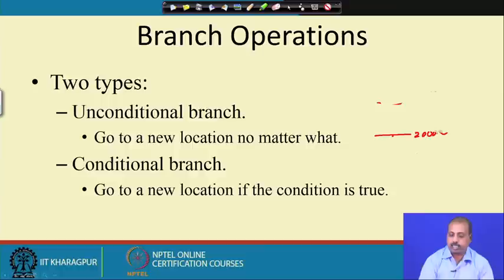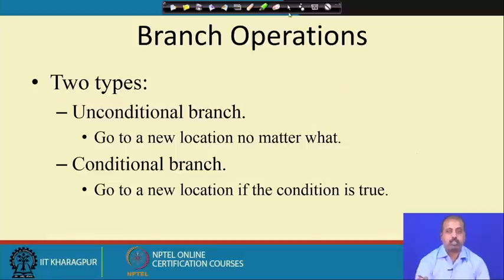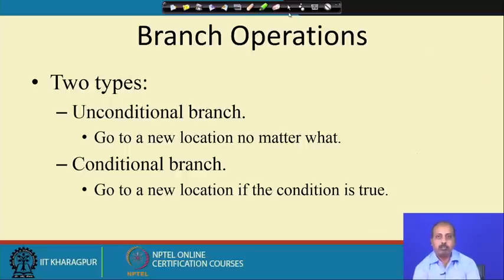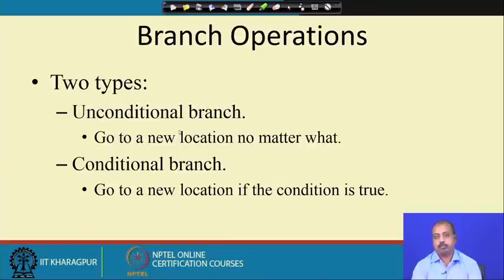There are two types of branch instructions. One is unconditional branch, where branching is independent of the outcome of a previous operation. The other is conditional branch, which is taken only if the previous operation evaluated some condition to be true. Unconditional branch goes to a new location no matter what — whatever the outcome of the previous instruction, it will branch to the new address.